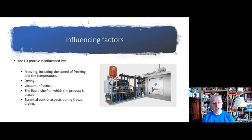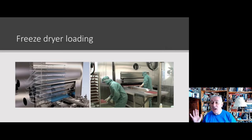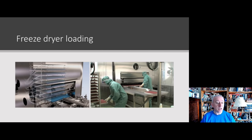The process is strongly influenced by the rate of freezing, the speed and temperature of the drying process, the vacuum, and the liquid shelf on which the product is placed — that is, the position in the freeze dryer. From a contamination control perspective, it's important that we load freeze dryers carefully, row by row, and recognize that people are a risk where a freeze dryer is loaded manually. This requires good microbial and particulate control. The future state is automated loading using robotics technology.